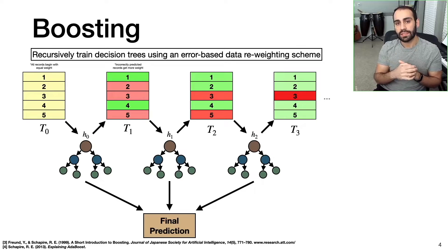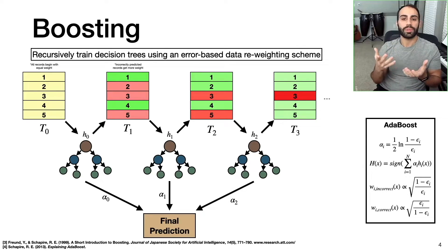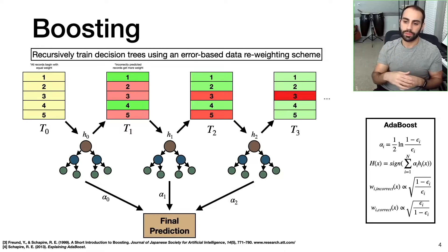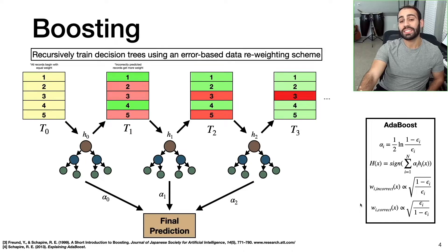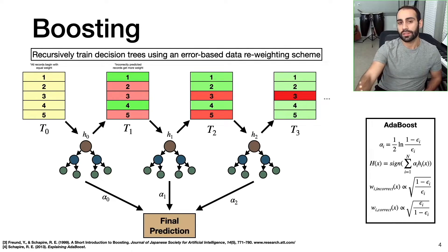The first technique that really introduced this idea of boosting is called AdaBoost, or adaptive boosting. When people talk about boosting, they're typically talking about a process similar to AdaBoost, which is essentially what I walked through here. All that AdaBoost does is combine each of these decision trees into a linear model and weight each of the decision tree predictions based on an alpha value. The alpha value is proportional to the decision tree's performance, and the specific reweighting scheme used in AdaBoost means incorrectly classified records get a weight update proportional to one factor, while correctly predicted records have their weight updated proportional to another factor.